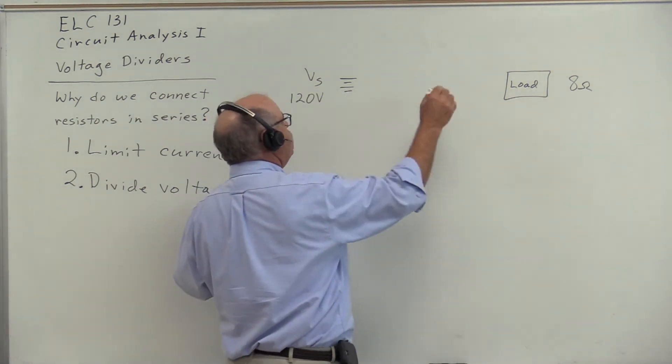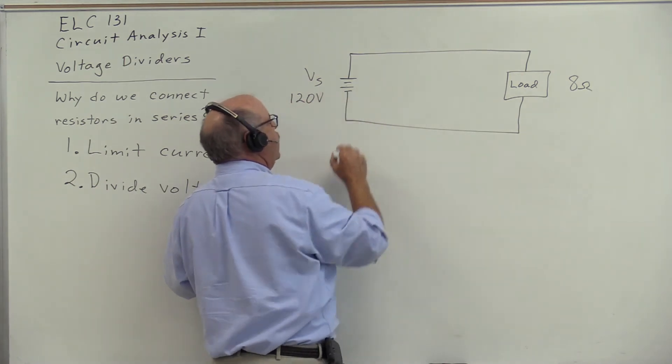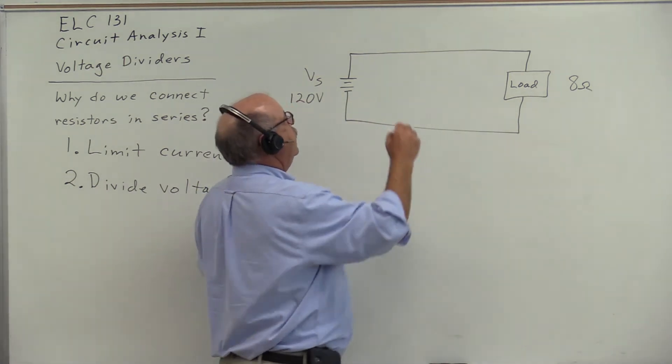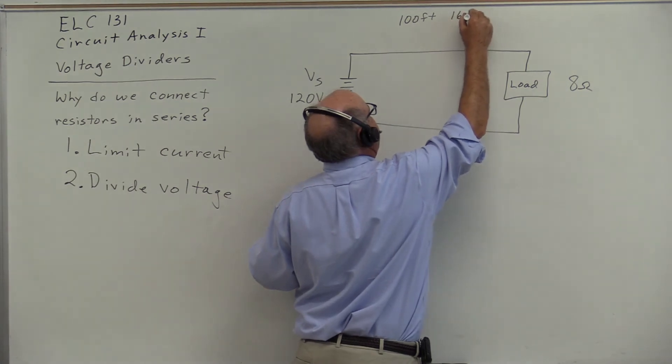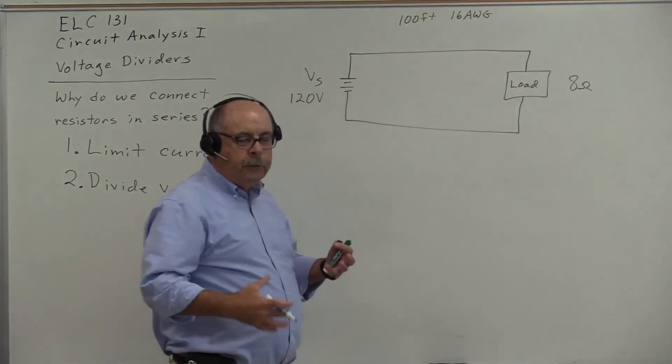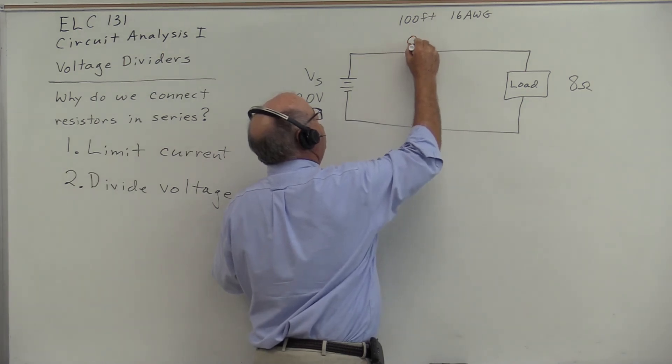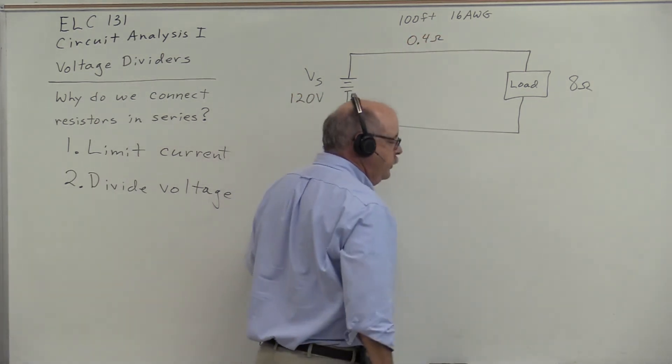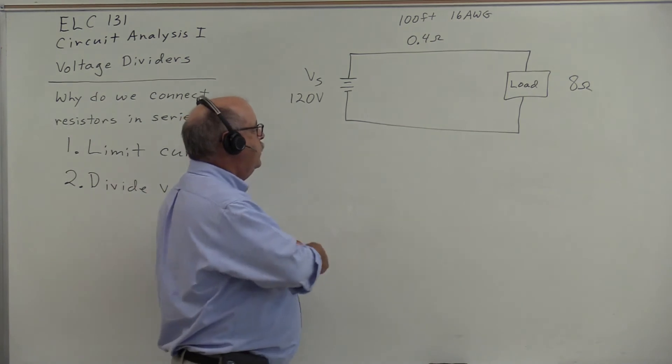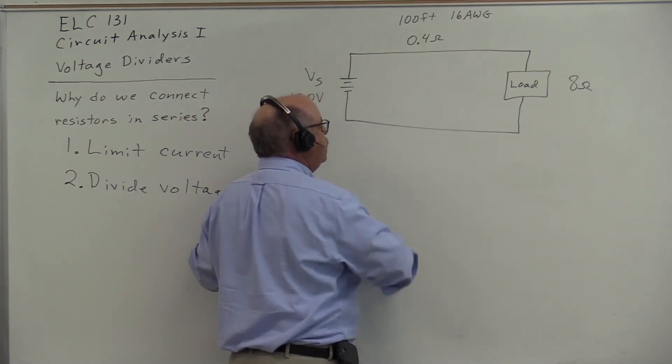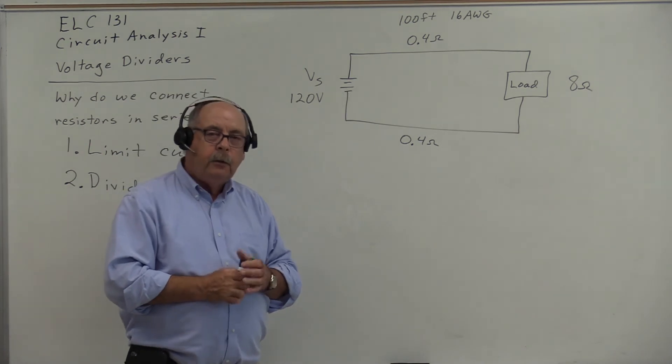Connected from the source to the load is an extension cord that's 100 feet of 16 gauge conductor, a typical drop cord. This length of conductor has approximately 0.4 ohms of resistance. When current flows to that load and back to the source, it will see a combined resistance of approximately 0.8 ohms.